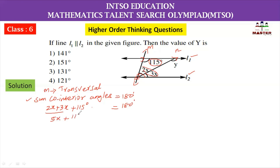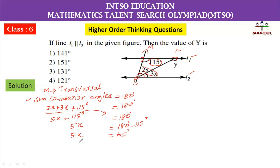So, 5X plus 115 degrees equals 180 degrees. Therefore 5X is equal to 180 minus 115 degrees. 5X is equal to 65 degrees. Then X is equal to 65 degrees divided by 5, which gives us 13 degrees. So the value of X is equal to 13 degrees.